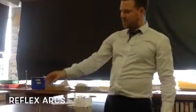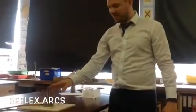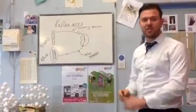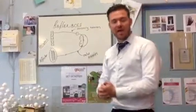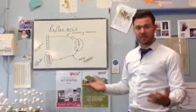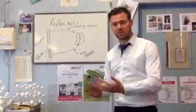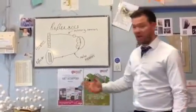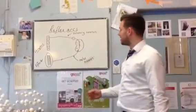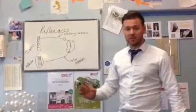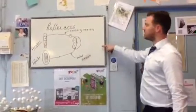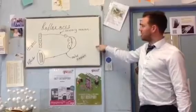This video is about reflex arcs. Say I had a hot Bunsen burner and I was to touch it — now that hurt. The reason that hurt is because I have receptors in my hand that detect the stimulus, which is pain or the heat. I didn't keep my hand on; I actually moved my hand away. And this is due to something called a reflex arc.